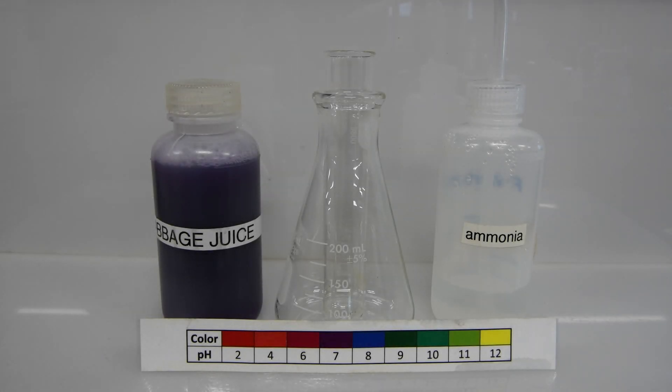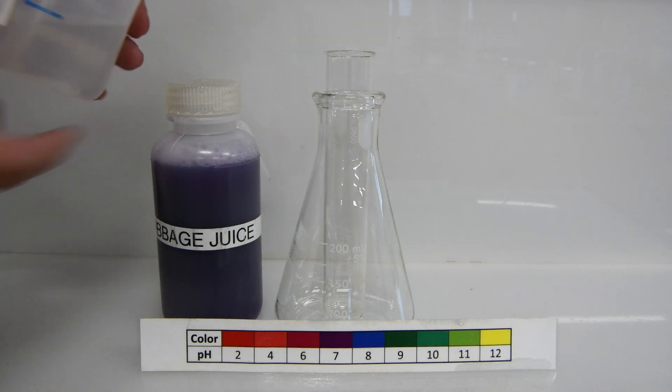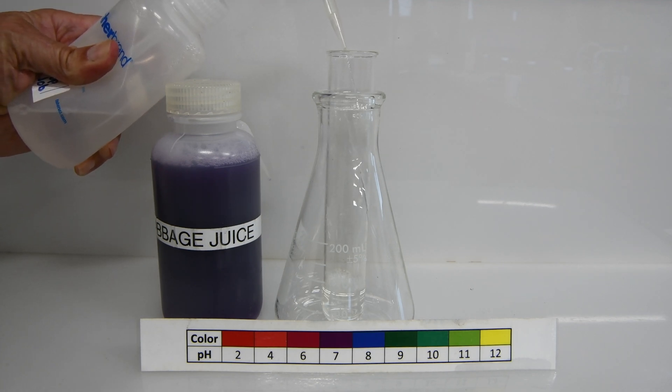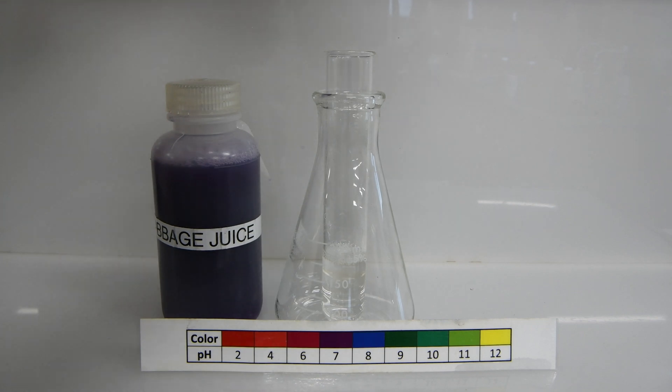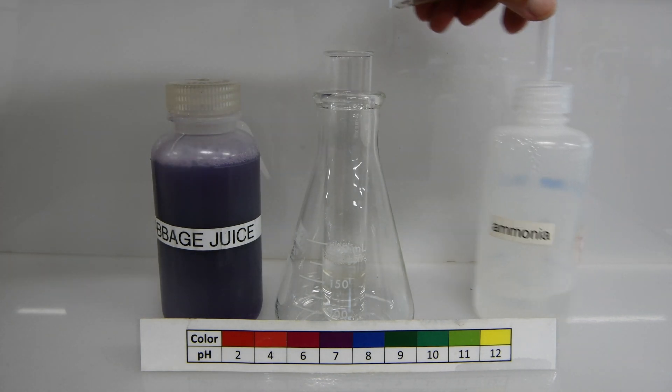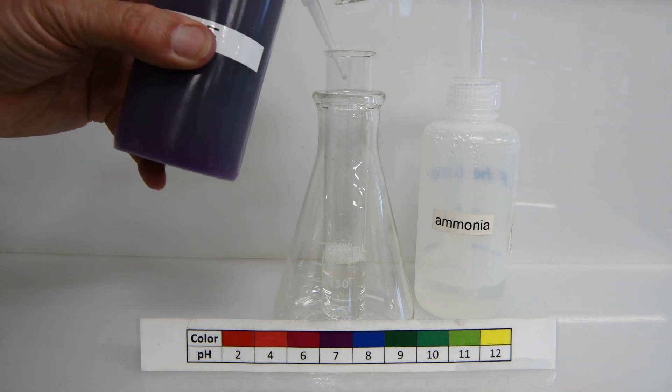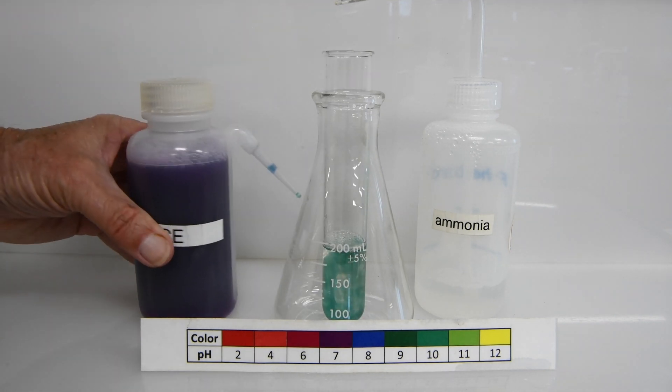Next up, let's test the sample of ammonia. Alright, now a bit of cabbage juice. Ooh, and this time we got a very lovely green color.